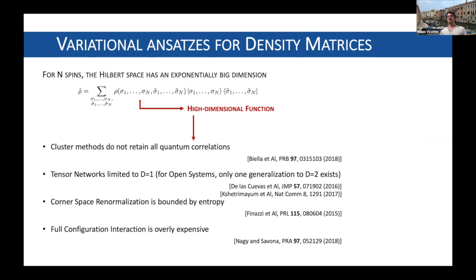Cluster methods that truncate quantum correlations have been proposed; tensor network methods have been generalized, though they mainly work in one dimension; and renormalization methods that select a tiny part of a Hilbert space have been proposed, but they are bounded by entropy. When I was doing my PhD, I found that we did not have a method that would retain quantum correlations, not be bounded by entropy, and work in two dimensions.